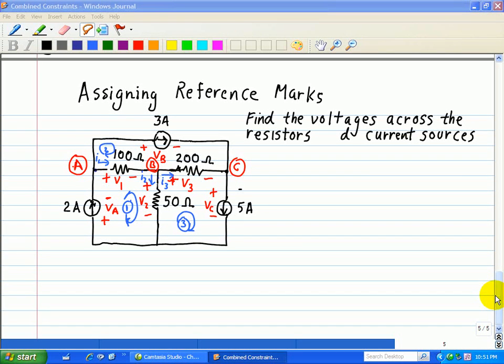Now that we've assigned our voltage polarities and current directions, we're going to analyze the circuit using our element constraints and our KVL-KCL equations.